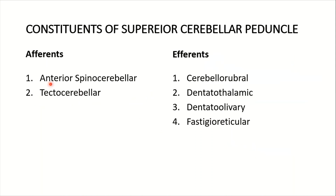Now the constituents of the cerebellar peduncles. These are afferents and efferents. Afferents of the superior cerebellar peduncle are the anterior spinocerebellar and the tectocerebellar tracts. The efferents are the cerebello-rubral, the dentato-thalamic — which is very important — the dentato-olivary, and the fastigioreticular.